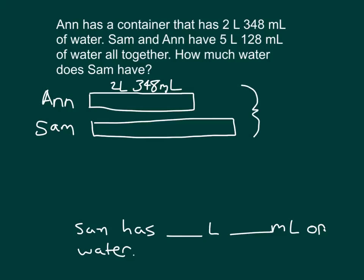And it says all together. That means that Ann and Sam's together, we know that, is 5 liters, 128 milliliters. So if they're together, that's an amount. What I don't know is this right here, Sam's, which I'm trying to solve for.